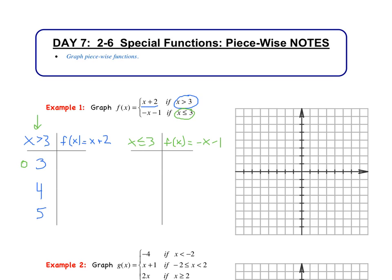We plug into f of x equals x plus 2. When x is 3, f of 3 is 5. When x is 4, we get 6. When x is 5, we get 7. So this piece is a ray starting at the point (3, 5) with an open circle, passing through those other points. We go ahead and graph this piece.